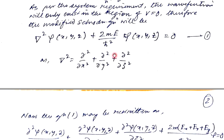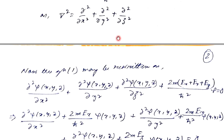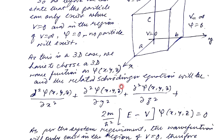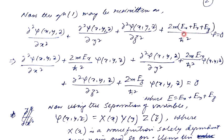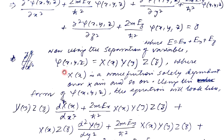Here we have written the total energy E as a combination of Ex, Ey, and Ez, representing the three dimensions x, y, and z. Now, we already read about the separation of variables in the last lecture. Using that, we write psi(x, y, z) as a combination of three wave functions: capital X, capital Y, and capital Z.